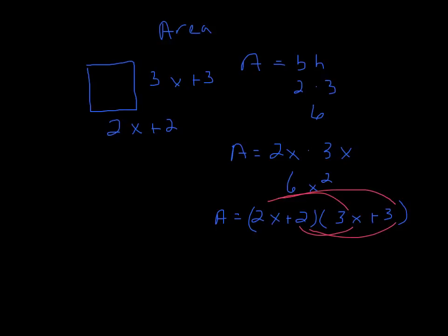So 2x times 3x is going to give you 6x squared. 2x times 3 is going to give you 6x. Then we go 2 times 3x will give you 6x again. And 2 times 3 is going to give you 6. Then we combine like terms. And you end up with 6x squared plus 12x plus 6. And that's your answer. So it's no more difficult than what you've done before with area. The only difference now is that you have binomials and polynomials that you have to mess with.